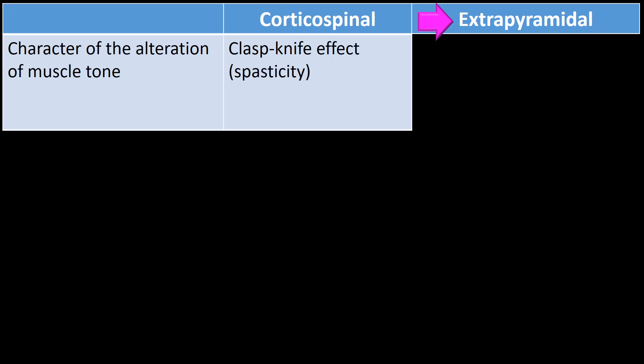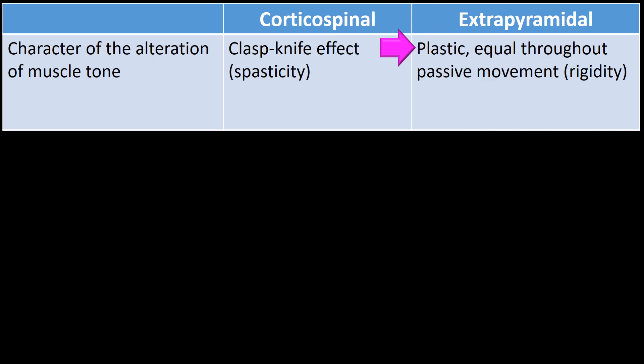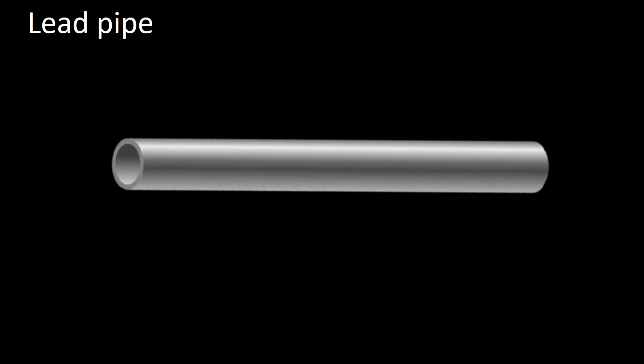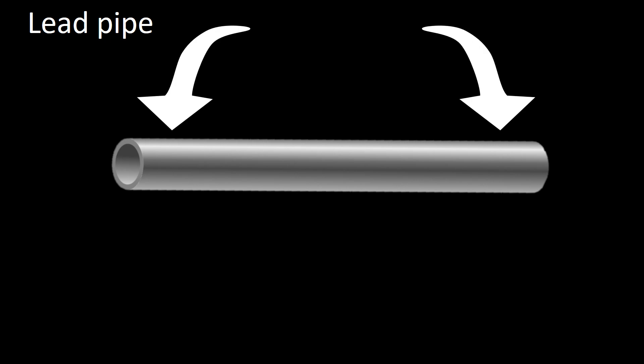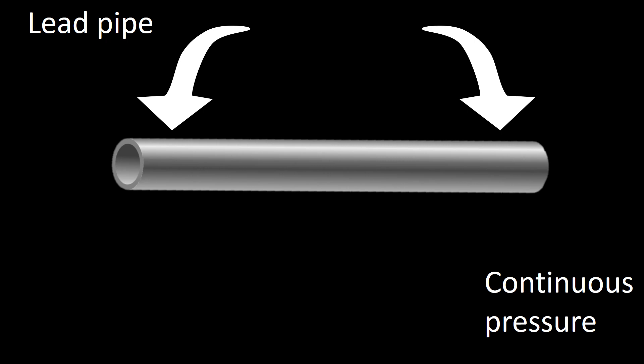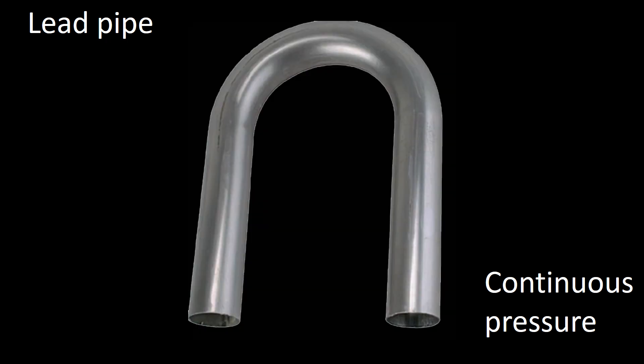In patients with extrapyramidal pathology, muscle tone findings are different. In the first form, the patient presents with equal resistance while passive movements are being tested. This type of resistance is referred to as plastic resistance or rigidity, more colloquially referred to as lead pipe resistance, because the pressure needed to bend a lead pipe needed to be continuous.